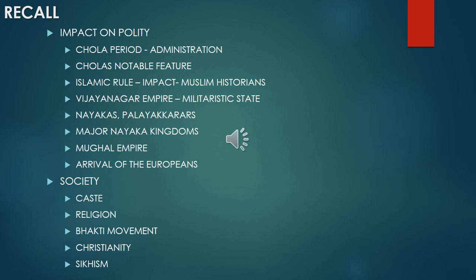Then we discussed the Mughal Empire, which was established in the 16th century — an important period in medieval India. We discussed how the Mughal Empire began to disintegrate, because of the orthodox Islamic principles of Aurangzeb. Finally, we discussed the arrival of the Europeans. The Europeans came to India as traders; there was a demand for Indian goods in European countries, referred to as Indian grace.